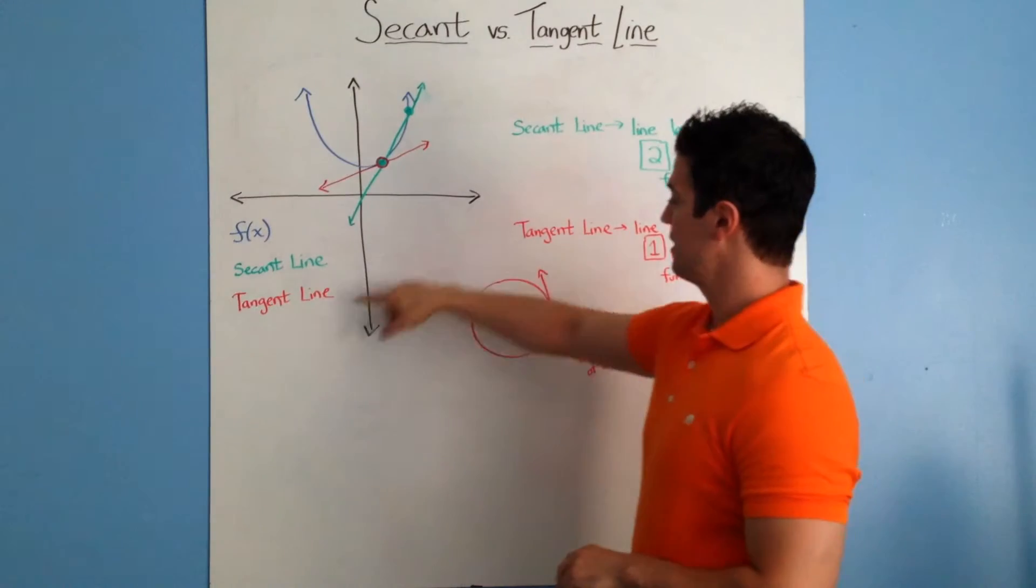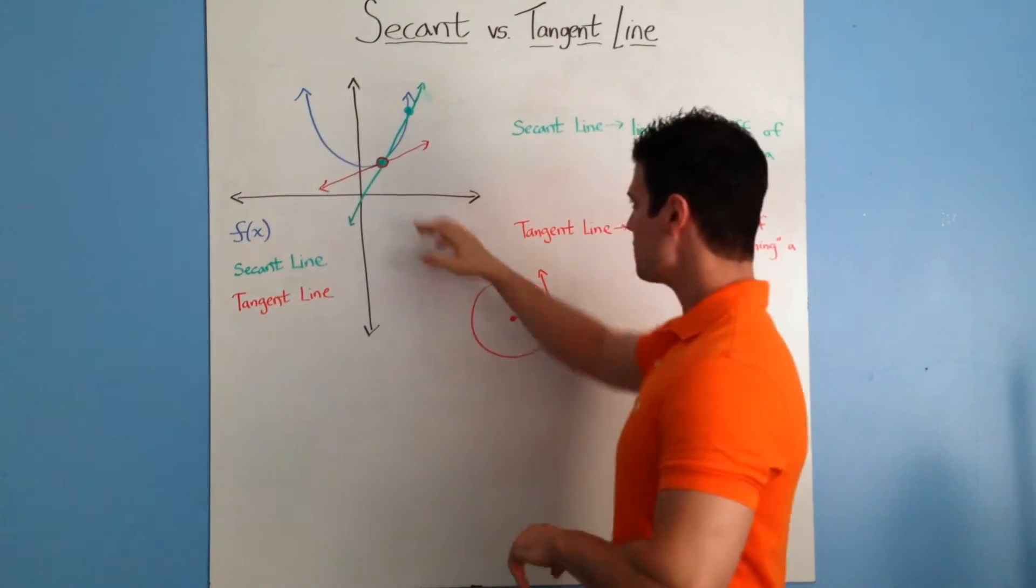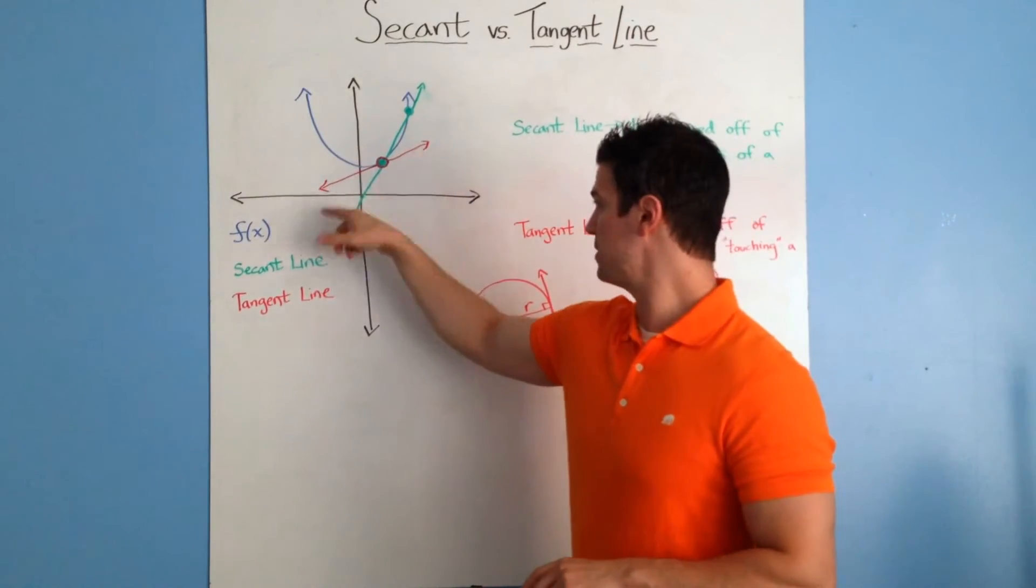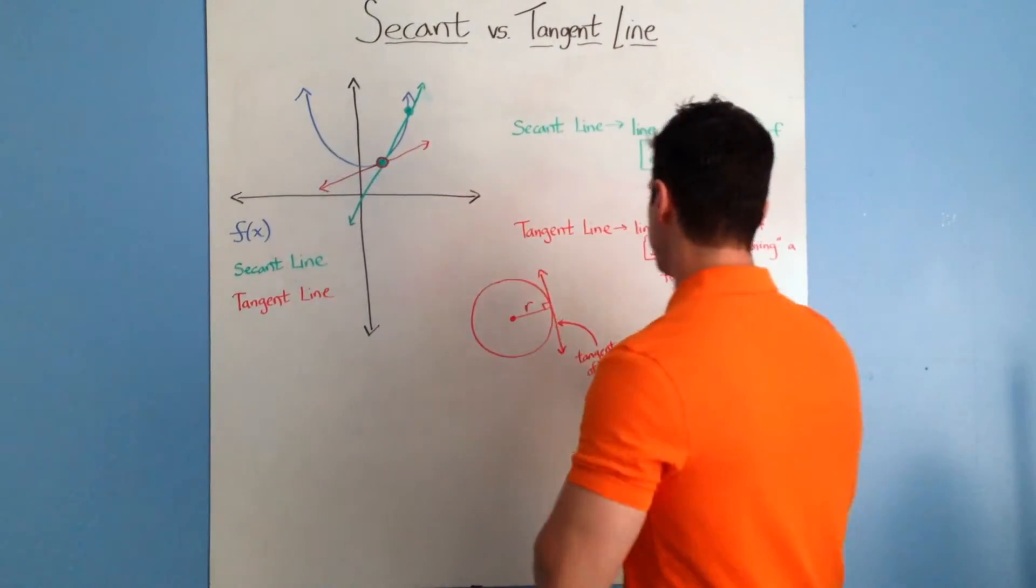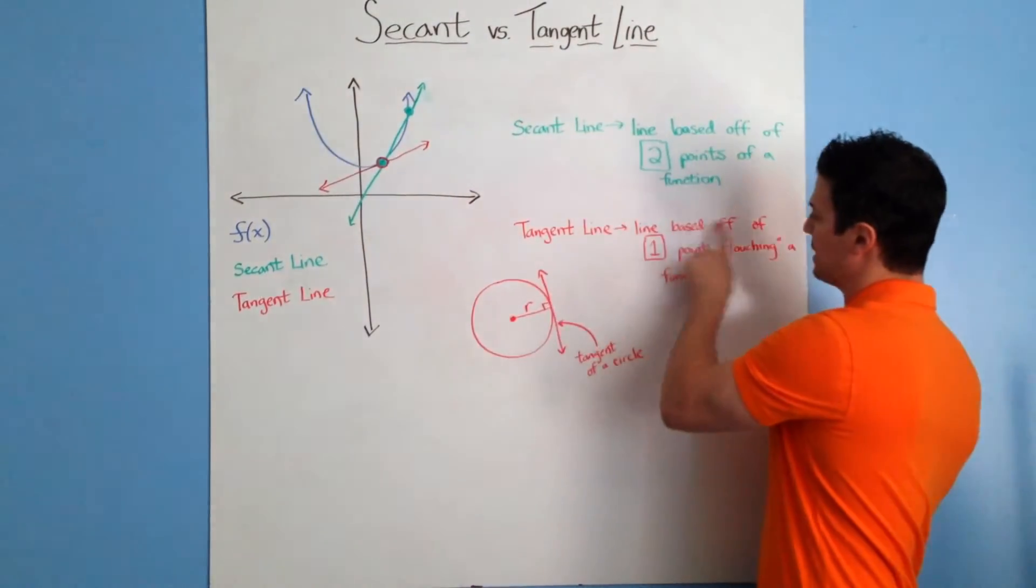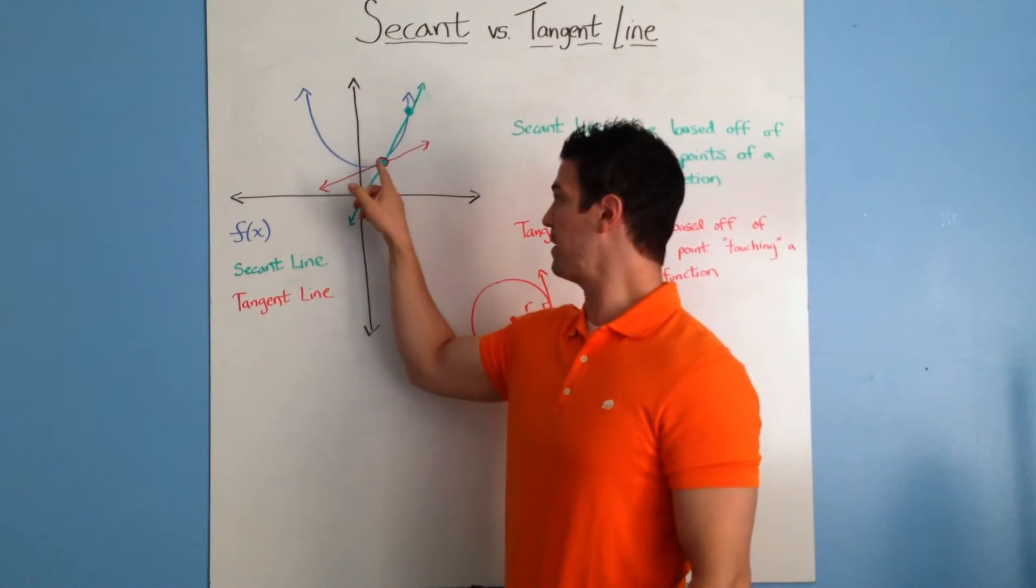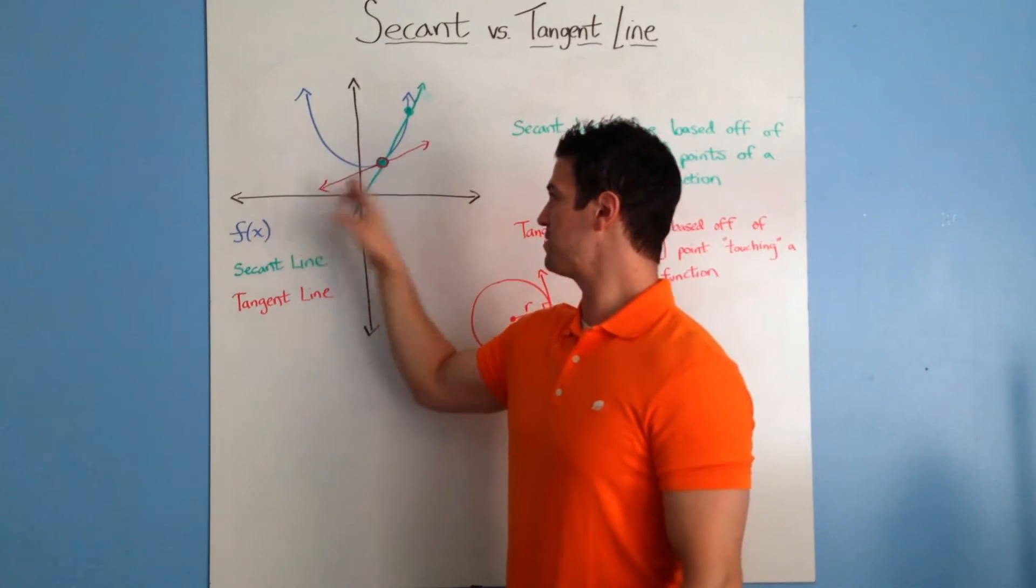The tangent line is in red. I have them sharing a point here, so this should be a red dot as well. A tangent line is a line based off one point touching a function. Right now it's touching this one point and nothing else.